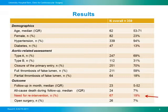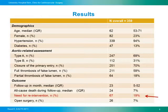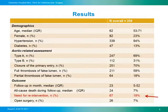Looking at the results of the whole cohort, the median age of the patients was 62. The large majority of patients with an aortic dissection are men, almost 80%, and hypertension was present in almost all patients, 94%. As I said before, 247 patients — roughly 70% — were treated for a type A aortic dissection, and 112, or 31%, for type B aortic dissection.